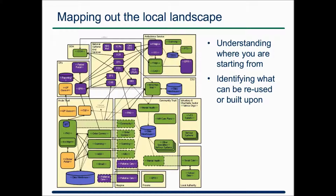The next useful thing is to map out what's already there. This picture I drew working with a particular area of the country shows all the key systems in place across various organisations in that region — anonymised to protect the innocent. It's easy to underestimate how important this is, because until you go out and find out what's there you don't realise what you've already got. Lots of systems, lots of arrows representing existing information flows — it really gives you a good idea of what you've already got and what you can build on. You're typically not starting from a blank sheet of paper.